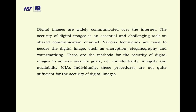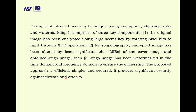To achieve secured goals of confidentiality, integrity, and availability, these procedures individually are not quite sufficient for the security of digital images. The techniques used are encryption, steganography, and watermarking. The original image is encrypted using a large secret key by rotating pixel bits to the right through XOR operation. For steganography, the encrypted image is altered by least significant bits. The image is also watermarked in two domains — frequency domain and time domain — to ensure ownership.